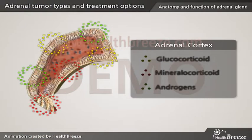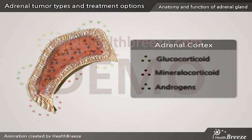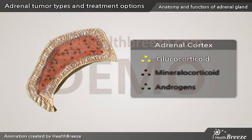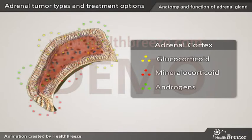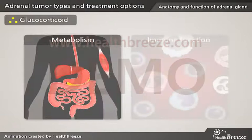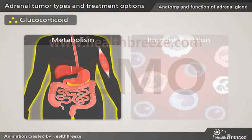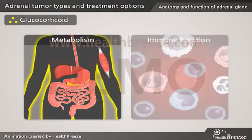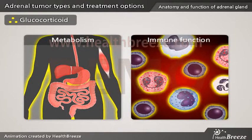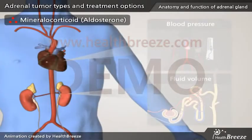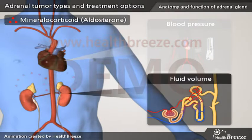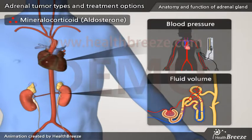The adrenal cortex produces steroid hormones such as glucocorticoid, mineralocorticoid, and androgens. Glucocorticoid regulates your sugar metabolism and immune function. Mineralocorticoid, such as aldosterone, regulates fluid volume, blood pressure, and certain electrolytes in your body.